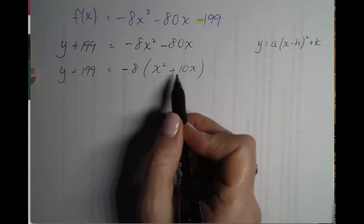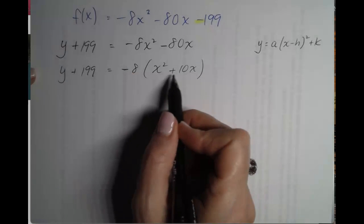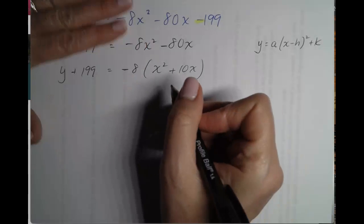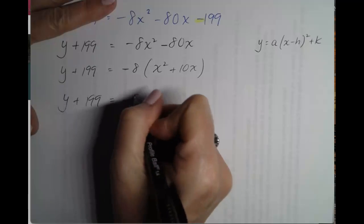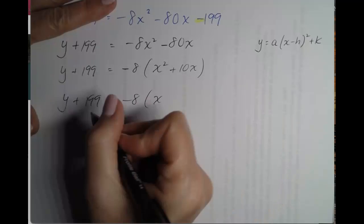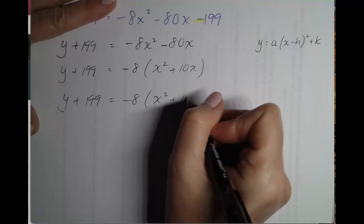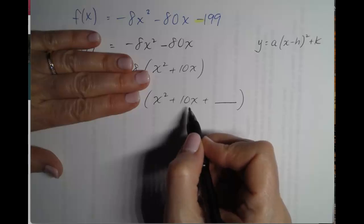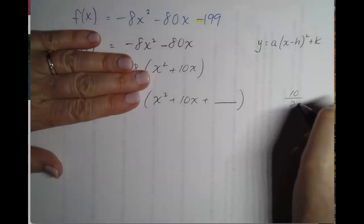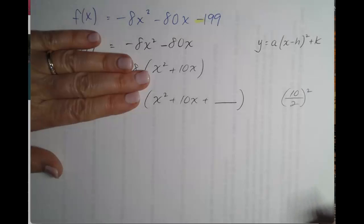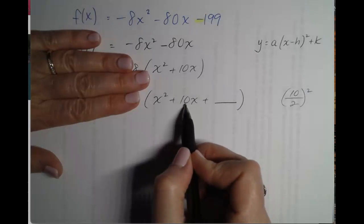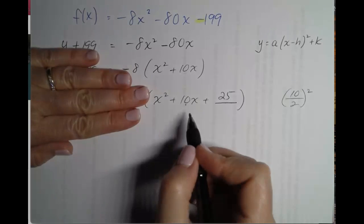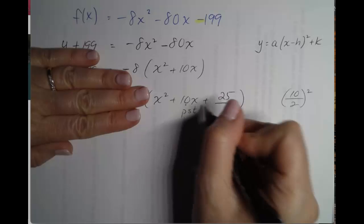Next, we will complete the square with what is inside of the parentheses. So x squared plus 10x plus a blank. So half of 10 is 5. Remember, it's the middle term divided by 2 and we will square it. So 10 divided by 2 is 5. 5 squared is 25. So we have completed a perfect square trinomial.